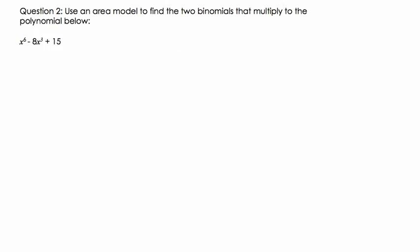We're using an area model to find the two binomials that multiply to the polynomial below. I'm going to rewrite it so you can definitely see it. Notice you get x to the 6th minus 8x to the 3rd plus 15.